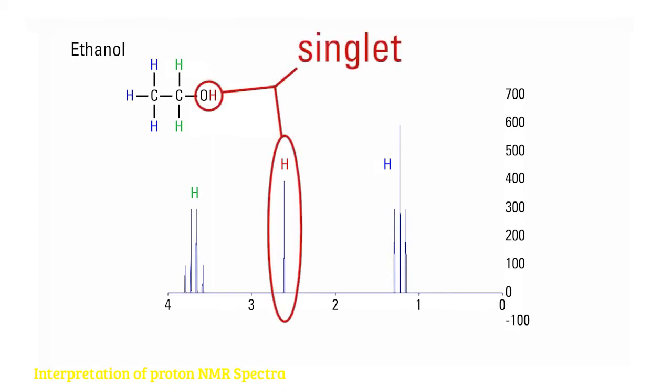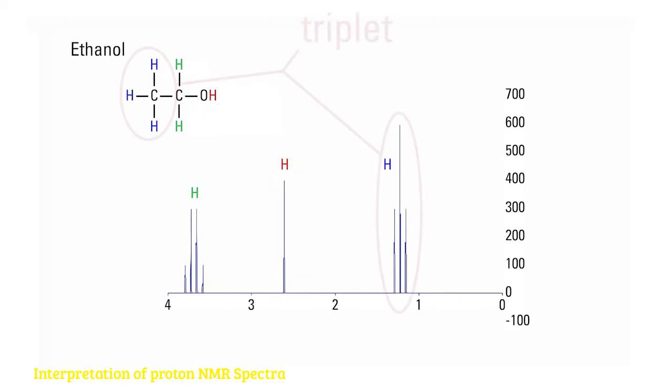Our spectrum has a singlet around 2.7 ppm, this corresponds to the OH hydrogen, and a triplet around the 1.3 ppm. This corresponds to the three hydrogens in the methyl group. The signal is split into a triplet due to the neighboring two hydrogens in the methylene group.